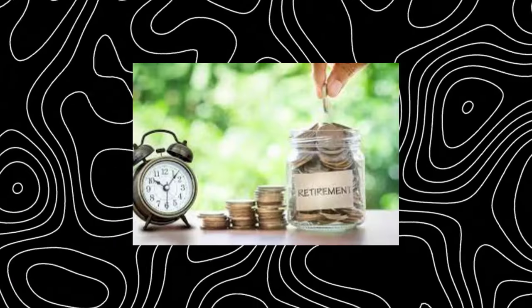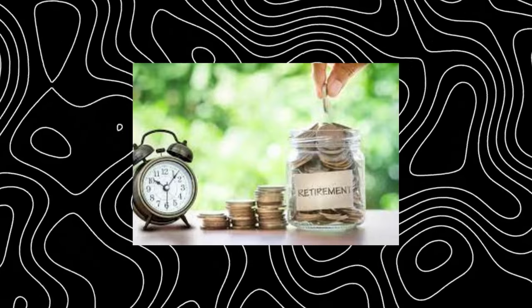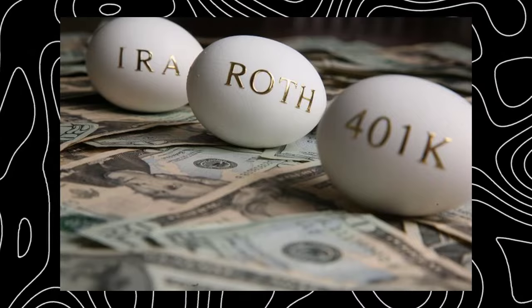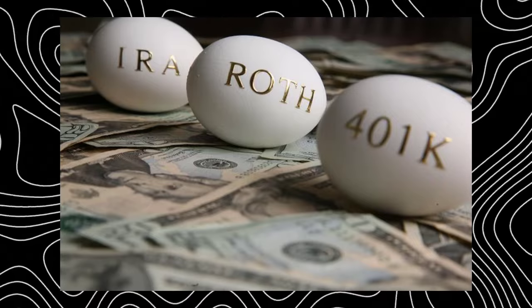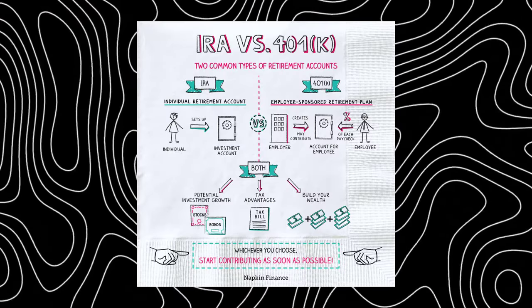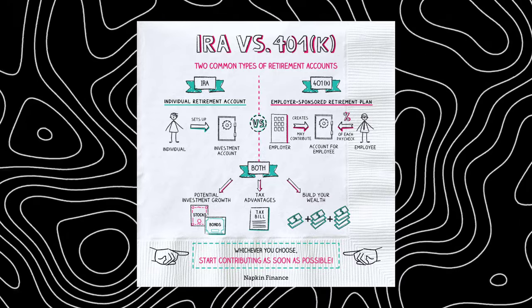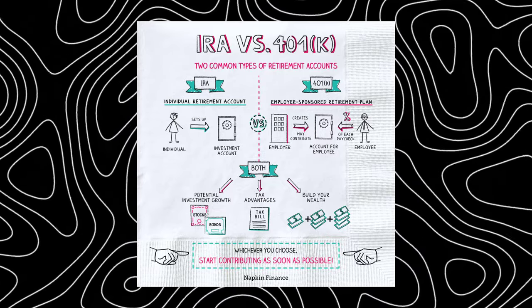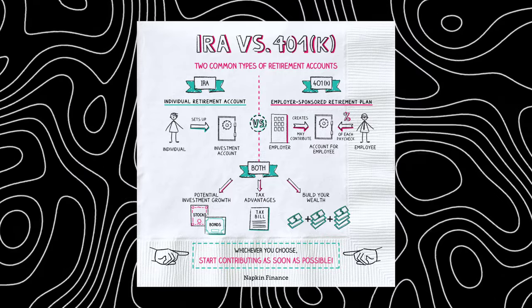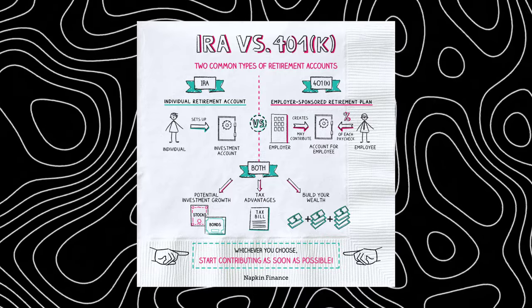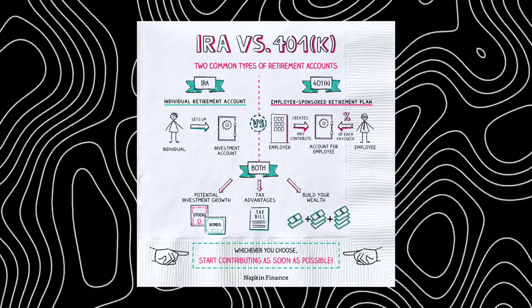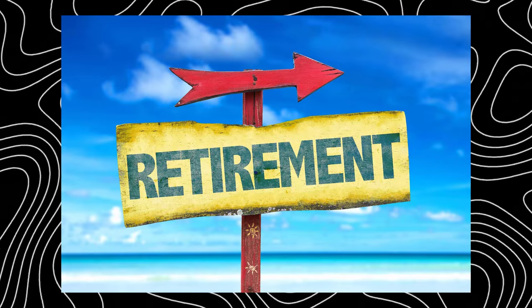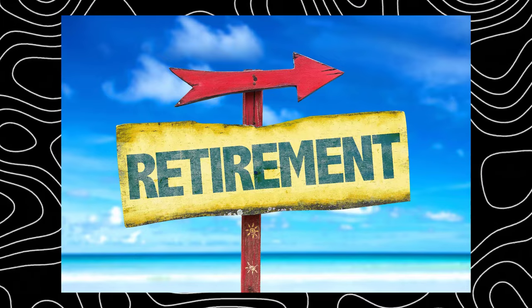Retirement: this involves long-term planning strategies to prepare financially for the time when you no longer have steady employment income. It involves saving, investing, and using different strategies to maintain a desired lifestyle in your later years. Starting early lets you take full advantage of compounding growth. Easy methods include setting up a 401(k) with your employer or creating a personal IRA. Professionals estimate a $1 million retirement account can cover a retiree's living expenses for at least 20 years, but this depends on your personal situation.